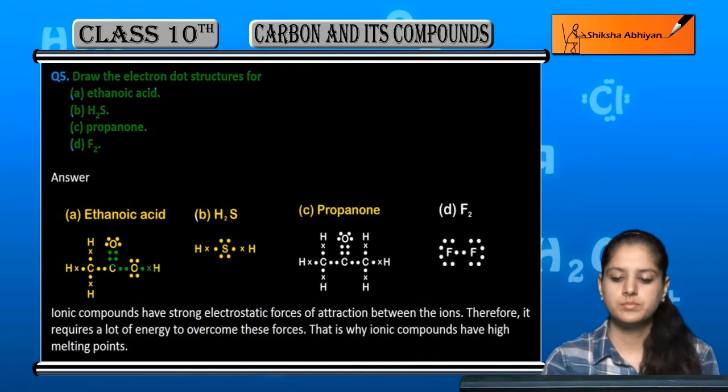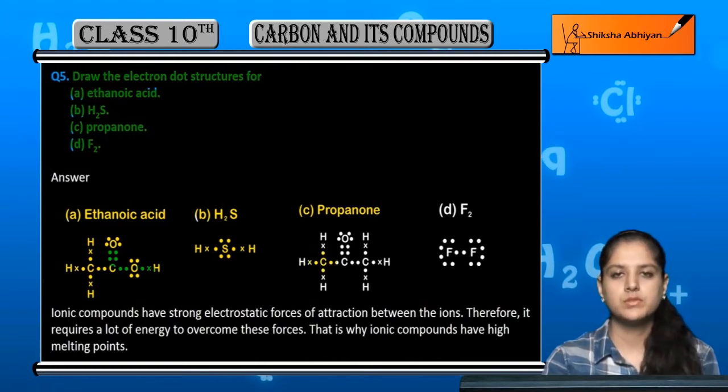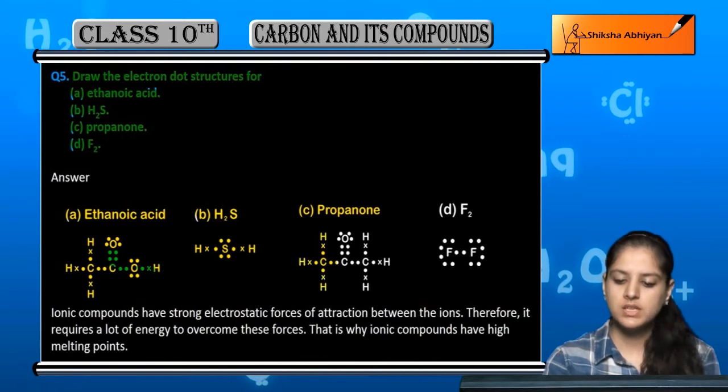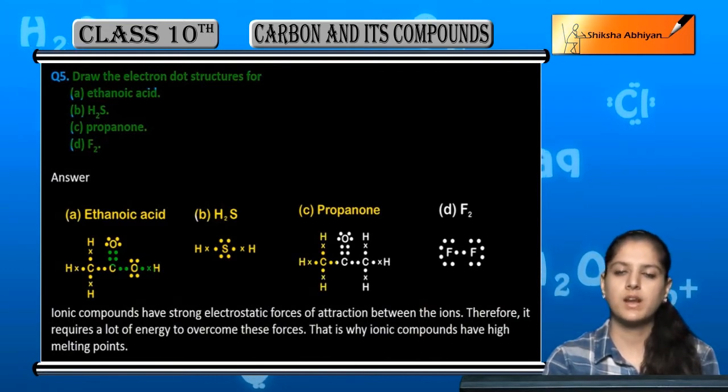Next is propanol. First, one carbon atom with 4 electrons and 3 hydrogen atoms with 1 electron each.